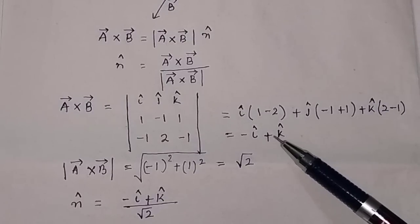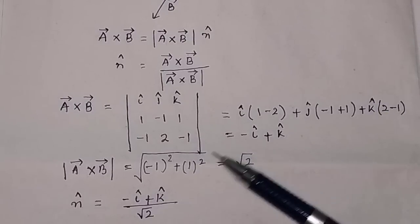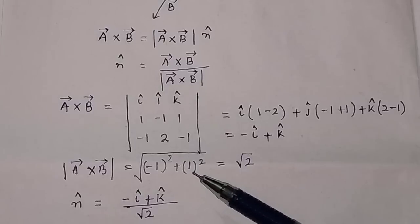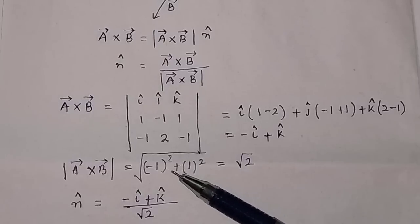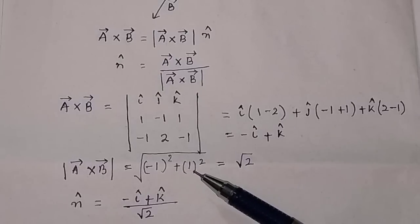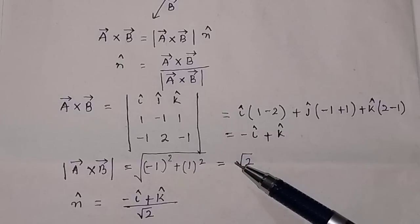The magnitude of a×b equals the square root of (minus 1)² plus (1)², which is square root of 1 plus 1, equal to the square root of 2.